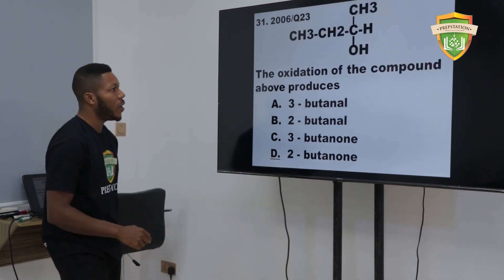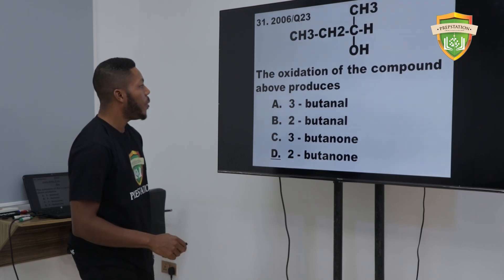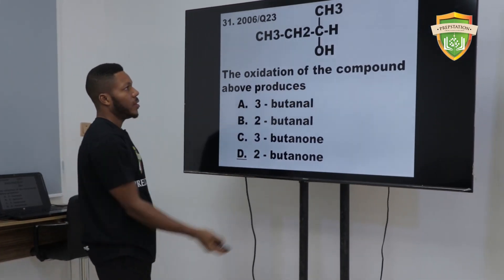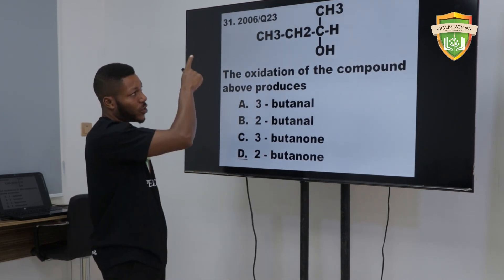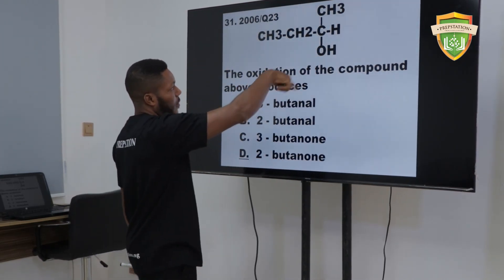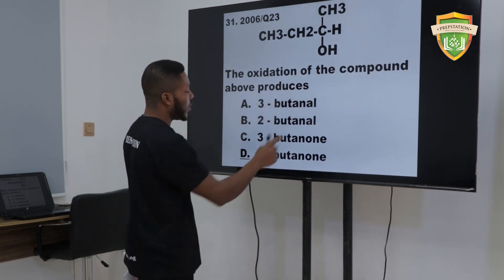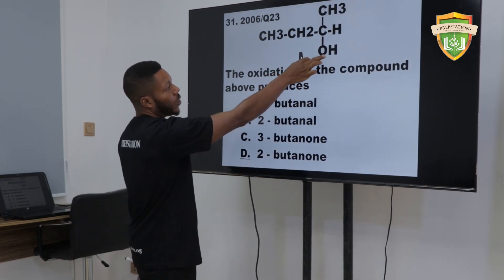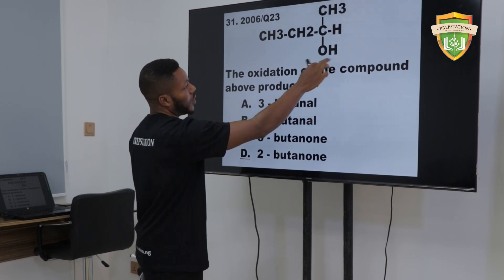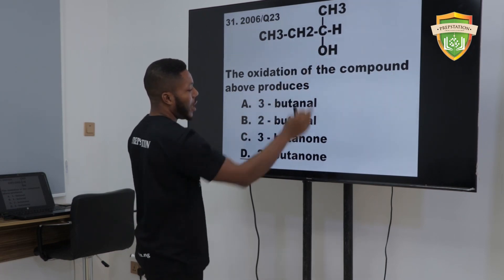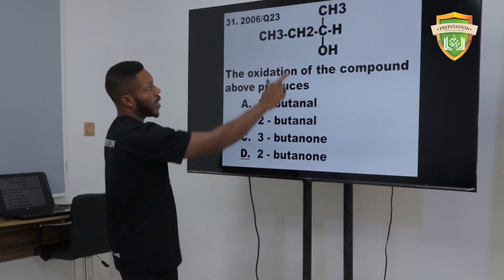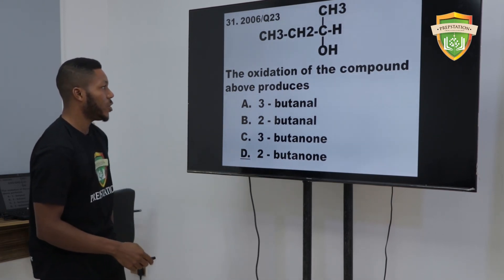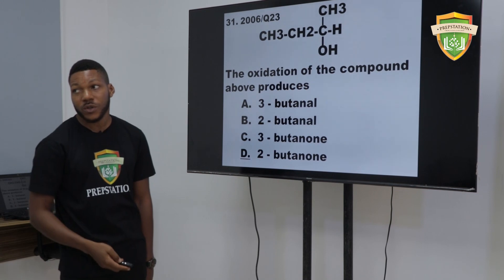The oxidation of the compound above — this is the reverse of the previous question. When it oxidizes, it gives a ketone — from alkanol to alkanone. The C-H bond will not change to a double bond; you get alkanone instead of alkanol. So the answer is butanone. Oxidation of alkanol gives butanone.